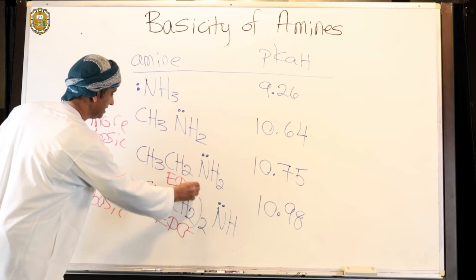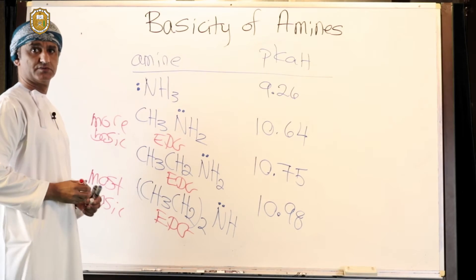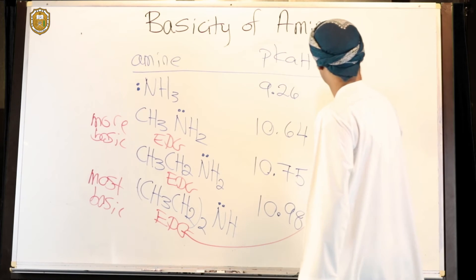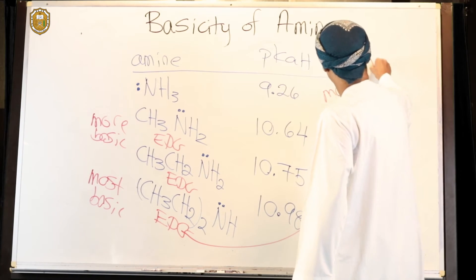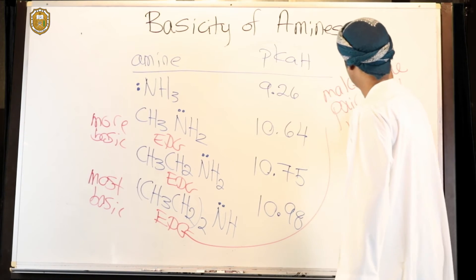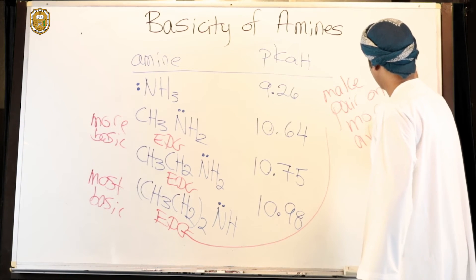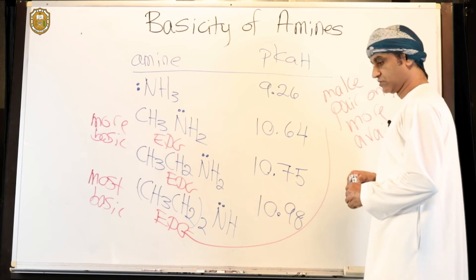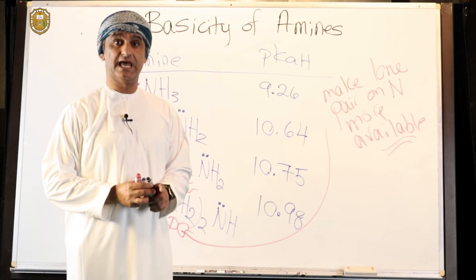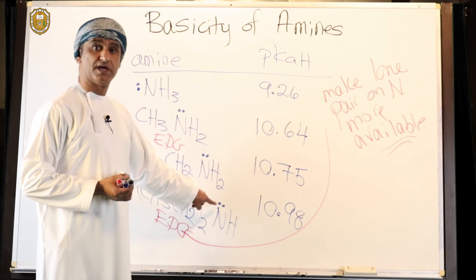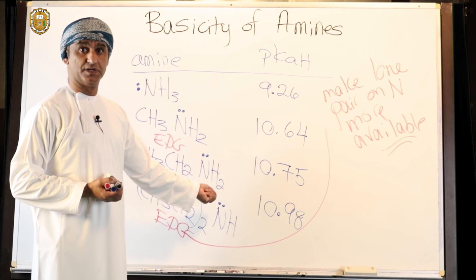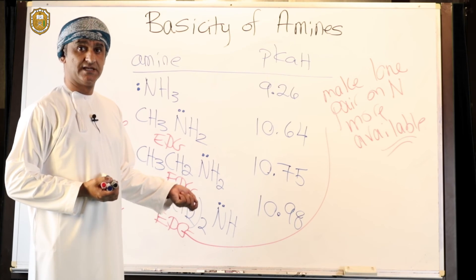These are all electron-donating groups by inductive effect. What these donating groups do is they make the lone pair on nitrogen more available. This availability term is extremely important - not only the presence of a lone pair on nitrogen, but also its availability. Any group that can make that lone pair on nitrogen more available should make the amine more basic. Any group that reduces the availability of that lone pair on nitrogen should make the amine less basic.